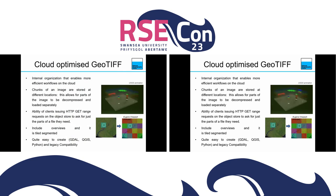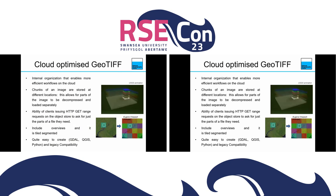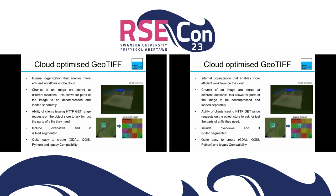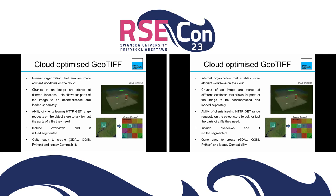We can get just a tile or just a layer instead of everything. COG files also include overviews, so if you don't want a high-resolution image you can download a low-resolution one instead. It's quite easy to create COG files — with just a few lines of code in Python, GDAL, or QGIS we can create one. You can convert a GeoTIFF to COG and it is legacy compatible, so if you have a system that works for GeoTIFF, it will work for COG files.